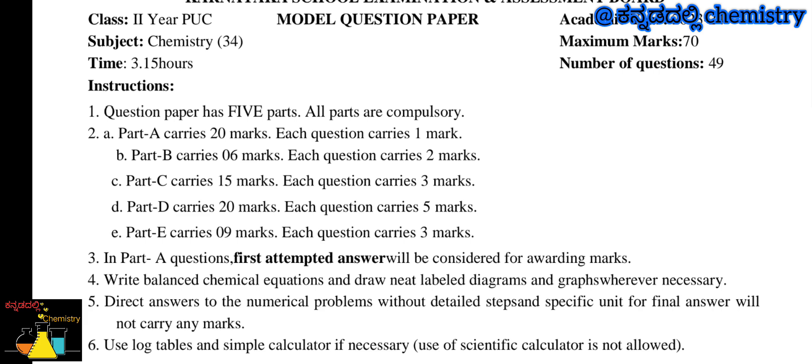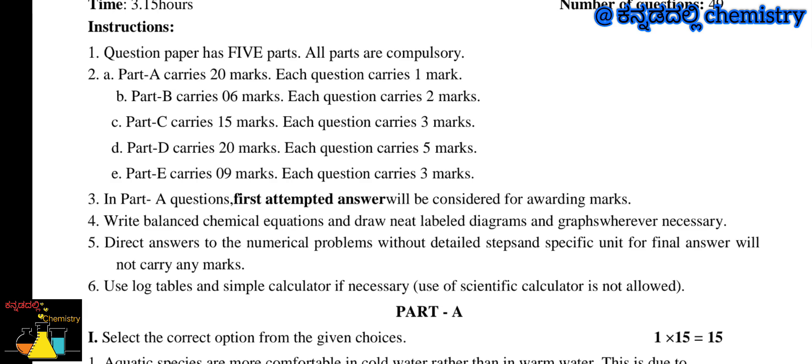Each question carries marks as per the part. The total for one section is 15 marks. There is a section of 20 marks where each question carries 5 marks. Part E carries 9 marks, where each question carries 3 marks and you answer 3 questions out of 8, giving 9 marks.